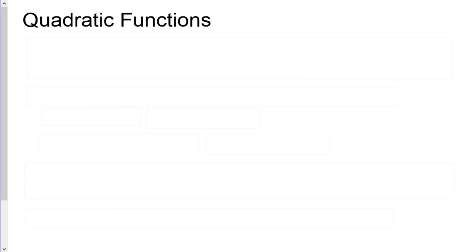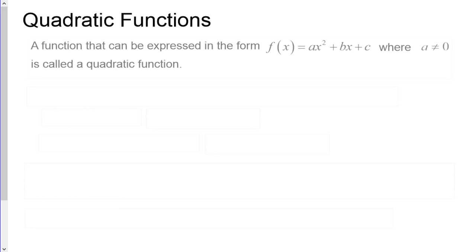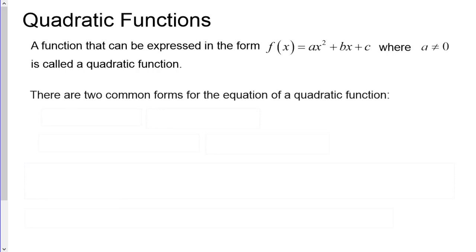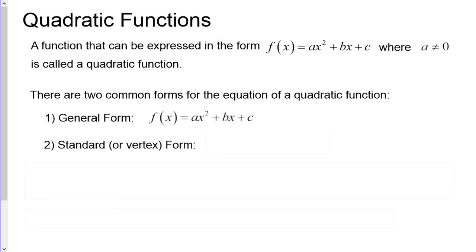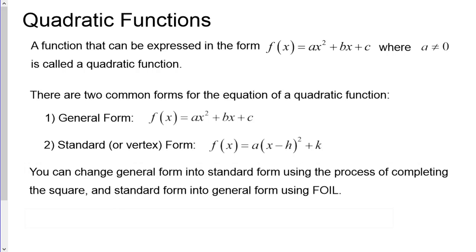In this lesson we're going to learn all about quadratic functions. A function that can be expressed in the form f(x) = ax² + bx + c, where a ≠ 0, is called a quadratic function. There are two common forms: general form, f(x) = ax² + bx + c, and standard or vertex form, f(x) = a(x - h)² + k.